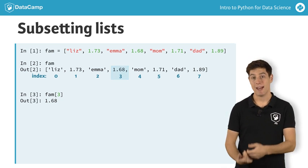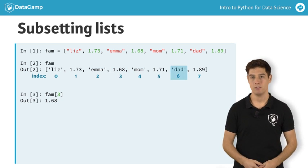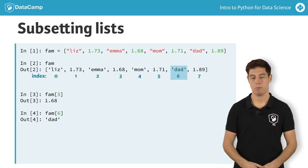Similarly, to select the string dad from the list, which is the seventh element, you'll need to put the index 6 inside square brackets.